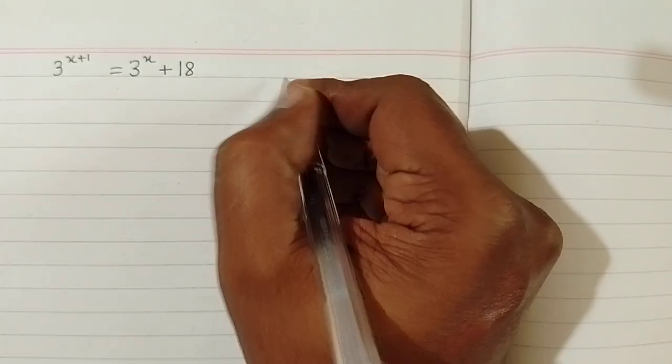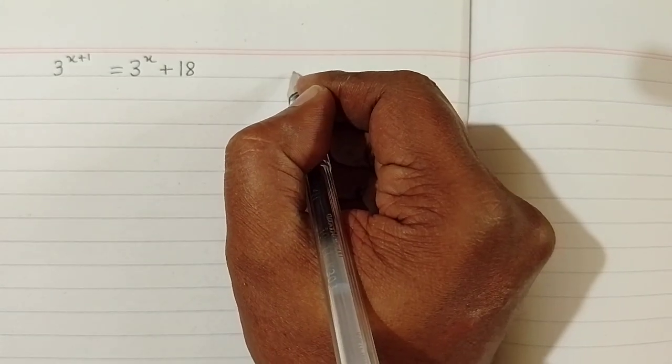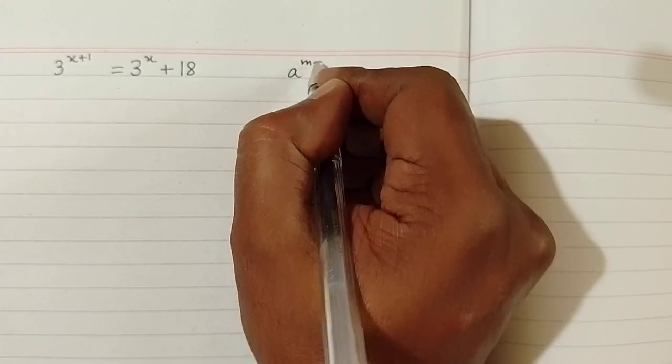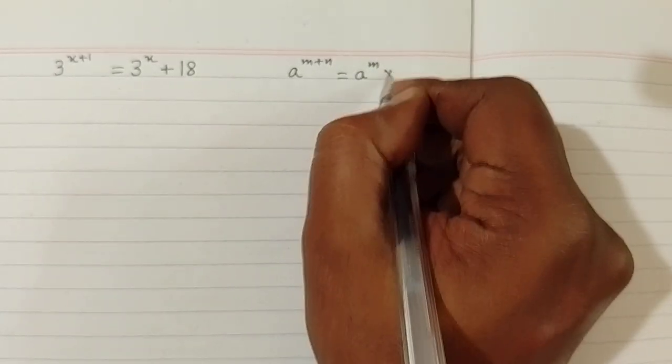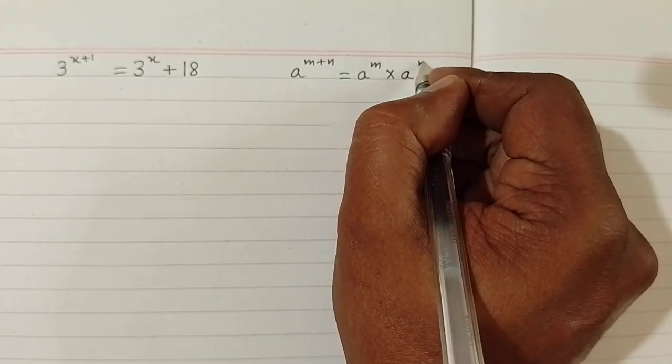First of all we can use a rule of indices which is a raised to the power m plus n can be written as a raised to the power m multiplied by a raised to the power n.